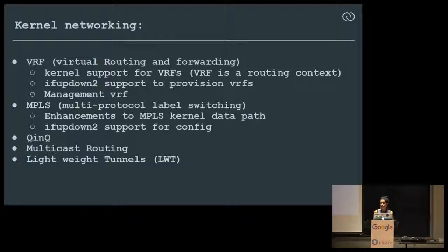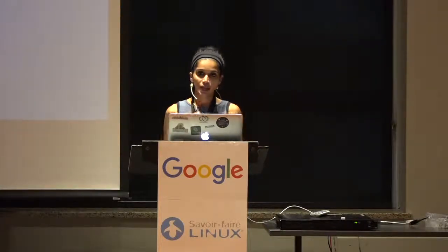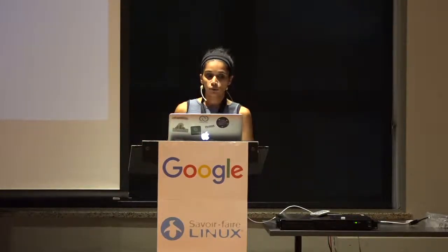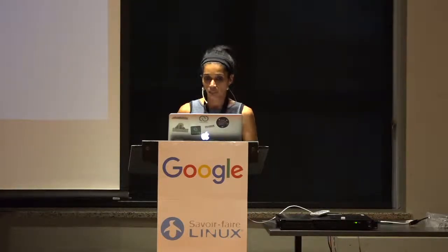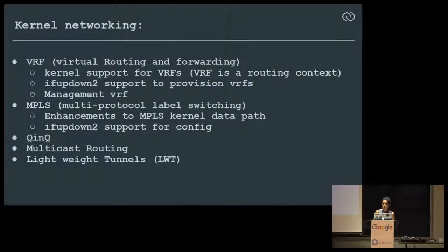For example, there is management VRF — a default feature in a network operating system — isolating your eth0 port from your switch ports. eth0 carries all management traffic and the L3 context is completely isolated from your switch port traffic. Linux kernel now has VRF support, and the newer Debian releases already have it. ifupdown2 also has support for provisioning VRF, including provisioning management VRF, managed via NOS defaults in ifupdown2 policy files.